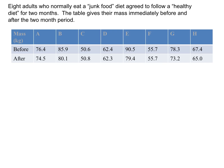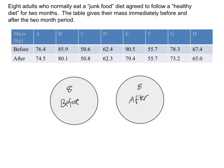On the next slide, although the numerical values are identical, the description is completely different. This time, eight adults who normally eat a junk food diet agreed to follow a healthy diet for two months, and their mass was recorded immediately before and after that two-month period. This means the data is paired — two sets of data were collected for the same individuals — so you will now use the paired t-test.